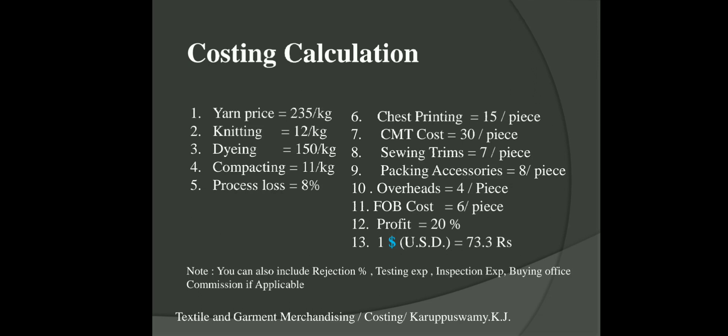Overheads means costs from departments common to all, like HR, merchandising, and accounting departments, and the monthly electricity bill — you cannot fit these into a single production department. While calculating garment costing you need to add these expenses too. To calculate overheads, take total expenses of those common departments and divide by the average production capacity of the factory to get overheads per piece.